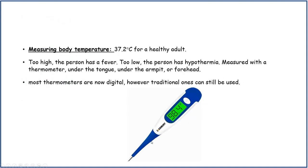Measuring body temperature: it should be about 37.2°C for a healthy adult. Too high could mean the person has a fever; too low, the person can have hypothermia. It is measured with a thermometer under the tongue, under the armpit, or on the forehead. Most thermometers are now digital, but traditional ones can still be used.